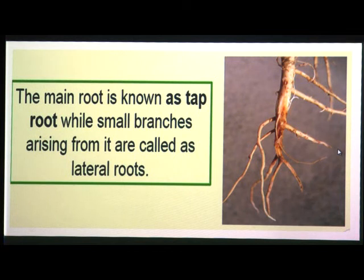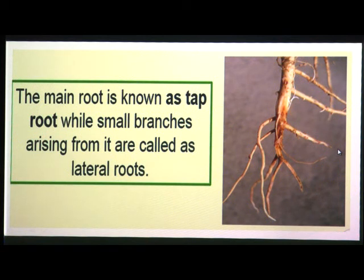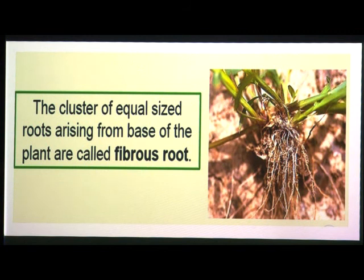Examples of plants with tap roots include mango, neem, pine, carrot, and radish. Next, let us look at the fibrous root.